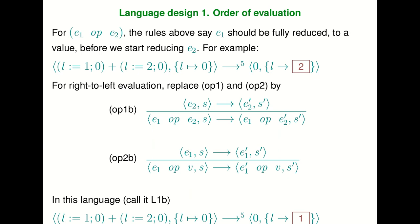When we wrote down the operational semantics we made a lot of choices, and I want to highlight some of the language design choices embodied in the semantics of L1. For instance, our rules for operator evaluation said that E1 has to be fully evaluated before you start evaluating E2, which means we're specifying left-to-right evaluation: first evaluate E1 until it's a value, then evaluate E2 until it's a value, and then perform the operation.